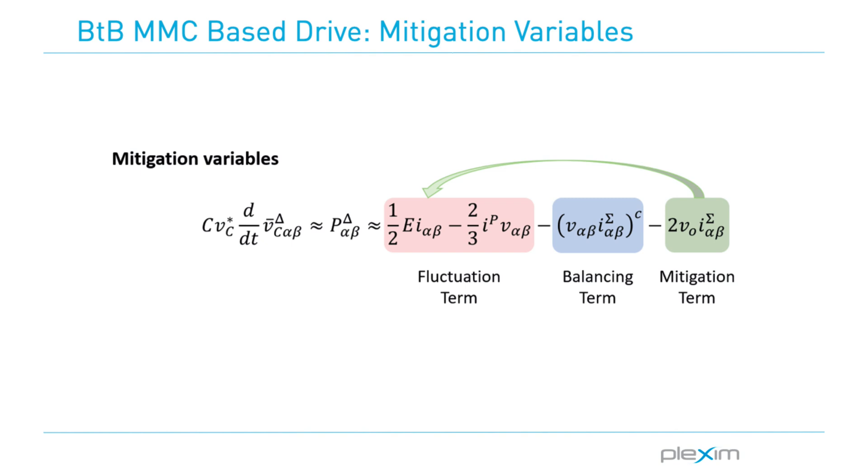However, the circulating currents cause an increase in switching and conduction losses of the system, and the addition of a common mode voltage can produce machine problems, such as winding insulation damages and leakage currents in the bearing, reducing the machine lifespan.